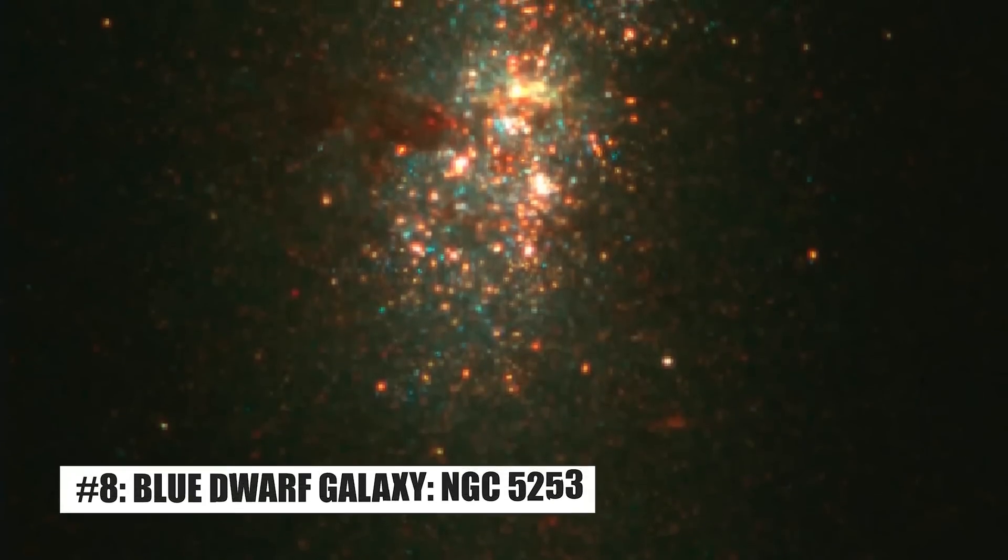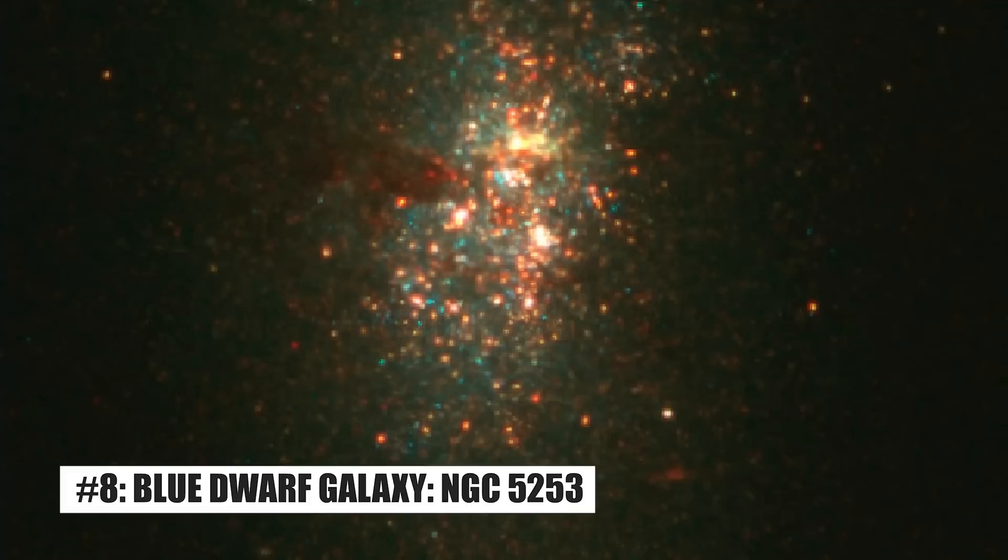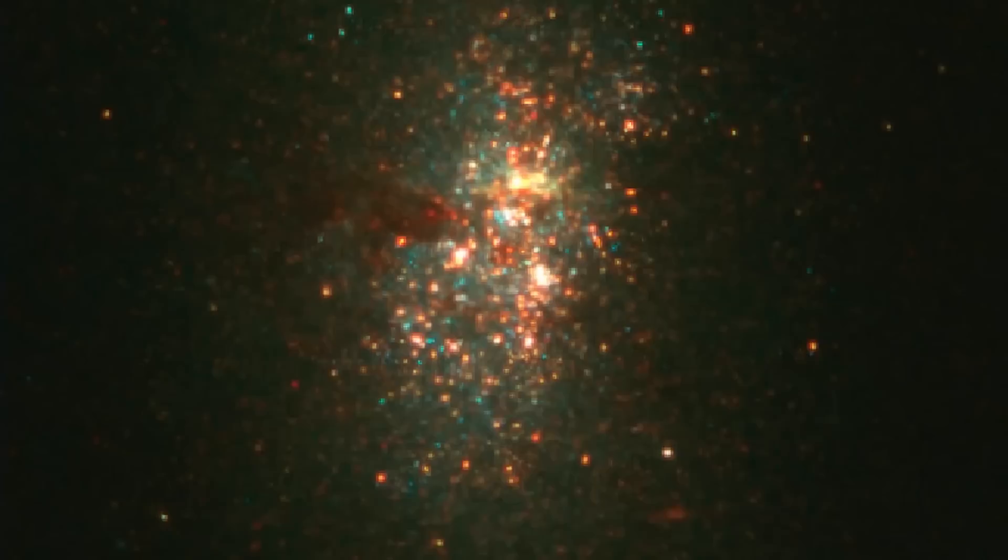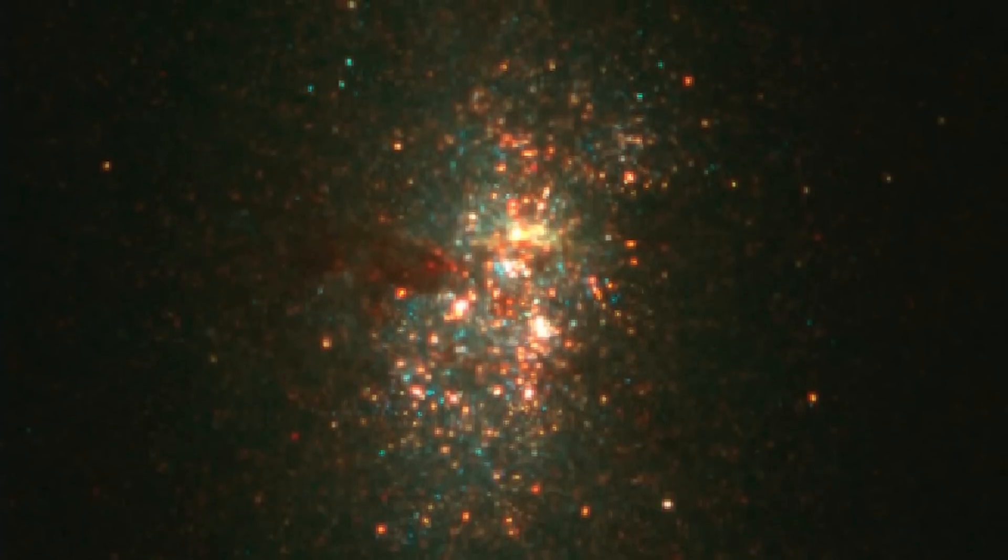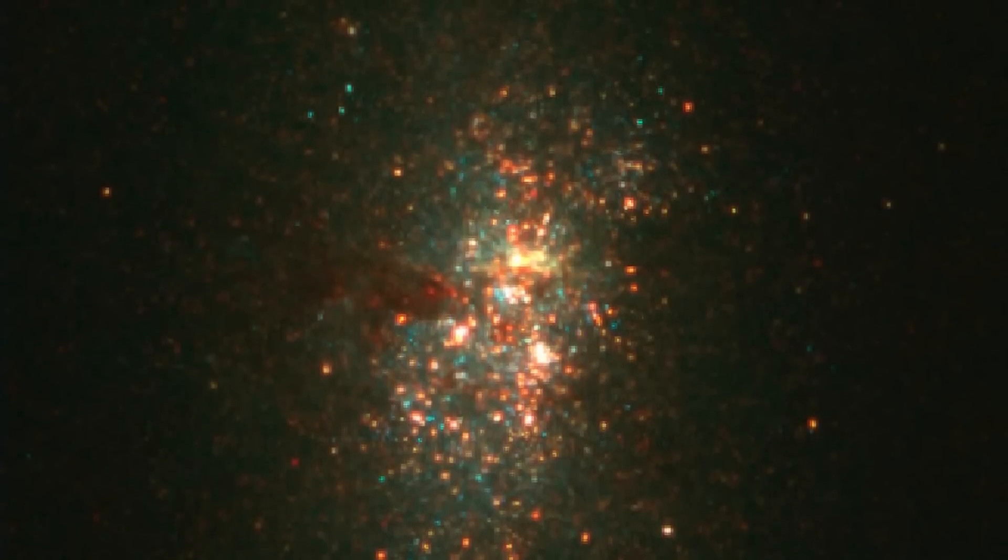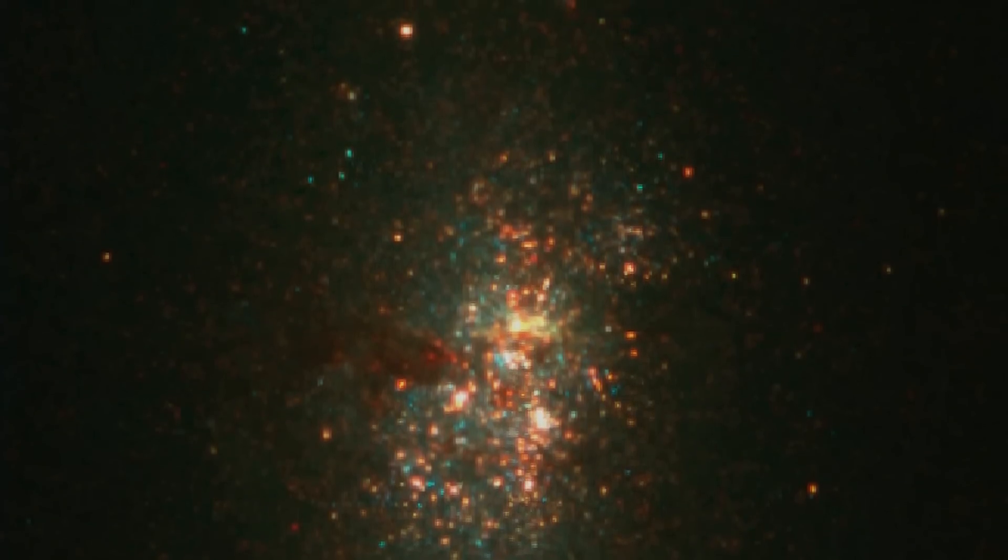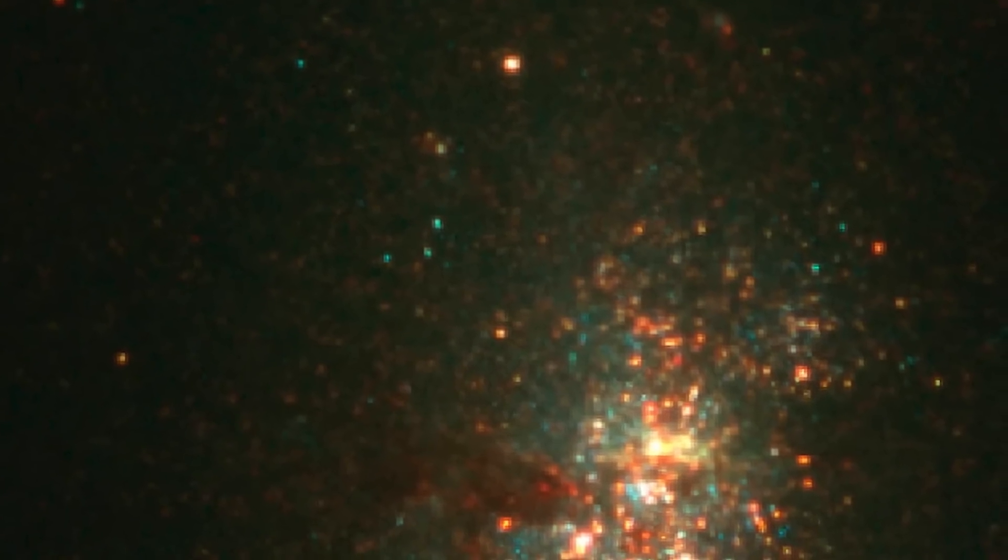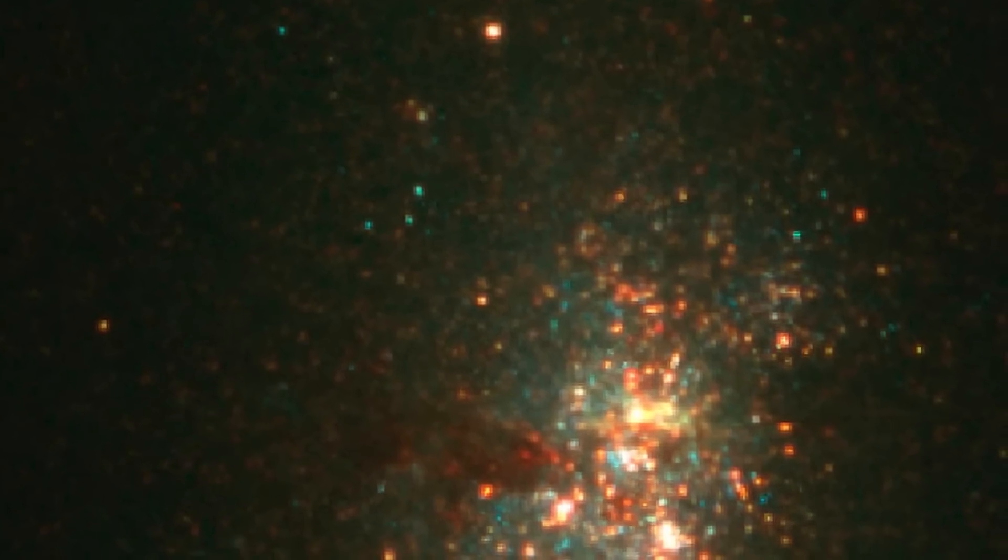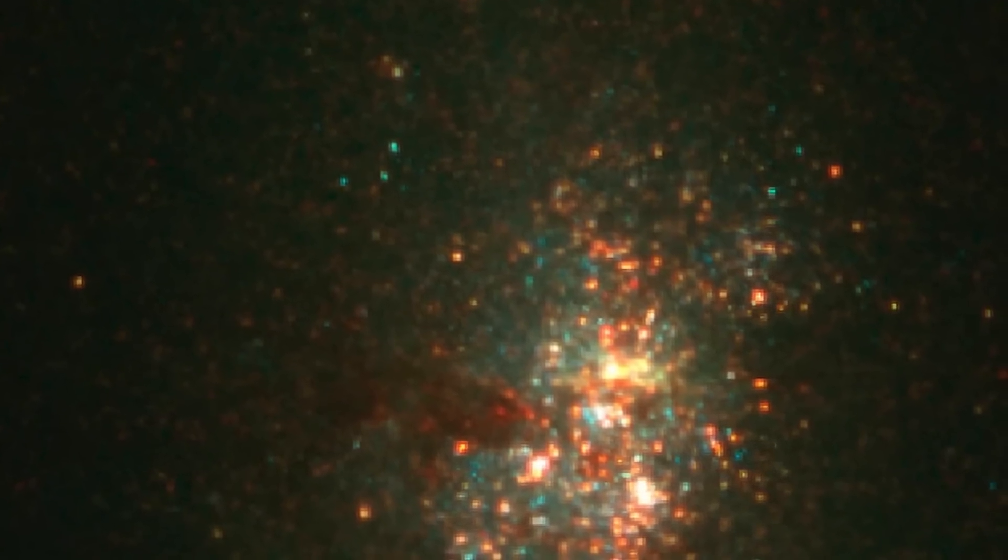Number 8. Blue Dwarf Galaxy NGC 5253. NGC 5253, a blue compact dwarf galaxy in the constellation Centorius, is relatively nearby at a distance of about 12 million light-years. In general, they are marked by regions of intense star formation activity. Despite the fact that these galaxies have a high density of dust, they are devoid of atoms heavier than hydrogen and helium, which are the essential components in the birth of stars.